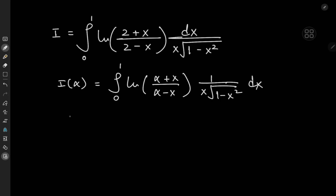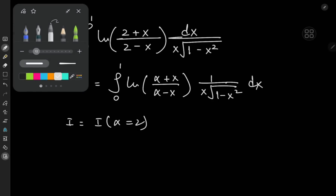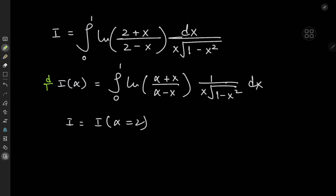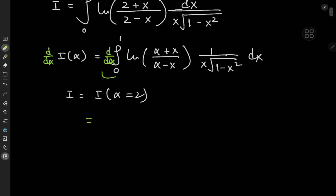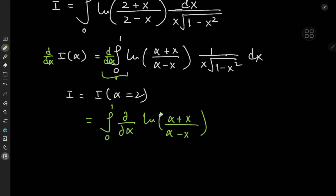The target integral I is the integral function evaluated at alpha equal to 2. Now we differentiate the integral function with respect to the parameter alpha, which gives us on the right-hand side, after switching the integration and differentiation operators via the Leibniz rule, the integral from 0 to 1 of the partial derivative of log(alpha + x)/(alpha - x) times 1/(x times the square root of 1 minus x squared) dx.